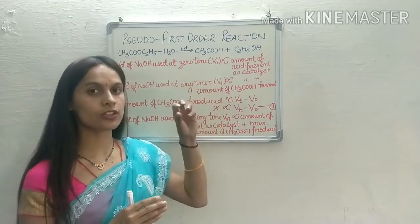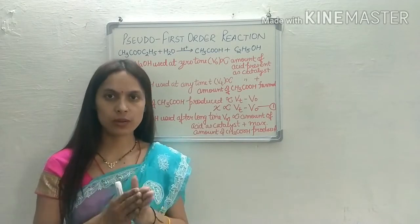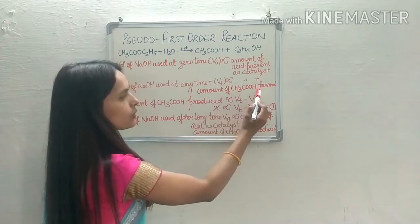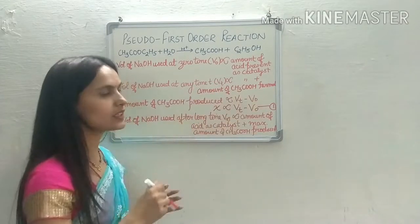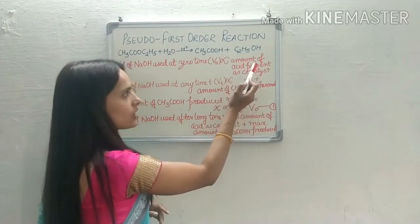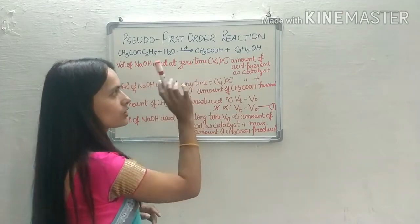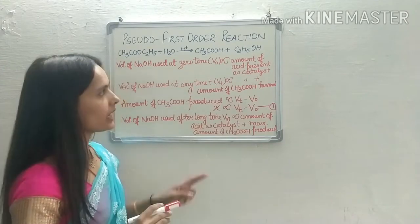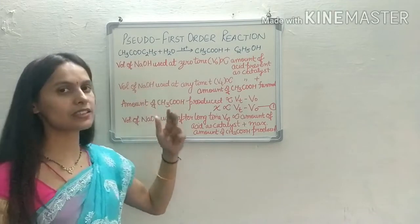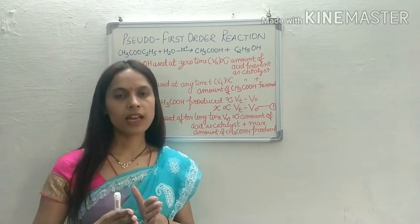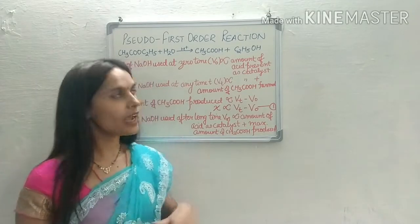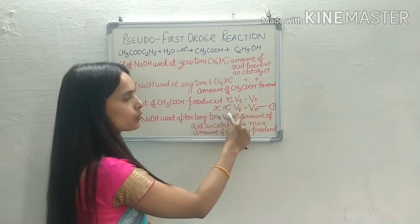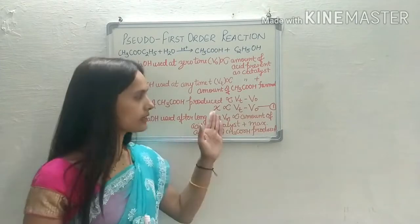Therefore, the amount of CH3COOH formed equals VT minus V0, where V0 accounts for the acid catalyst. If X is the amount of ethyl acetate hydrolyzed at time T, then X is directly proportional to VT minus V0. This gives us equation 1: X = VT − V0.